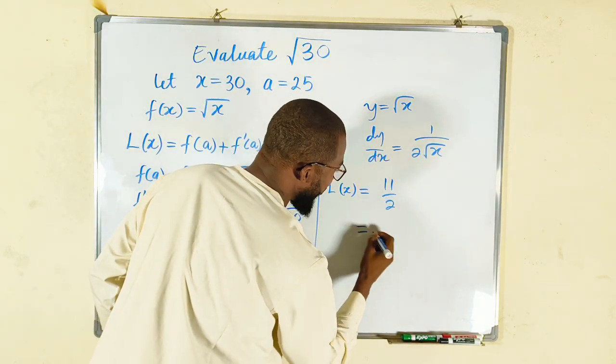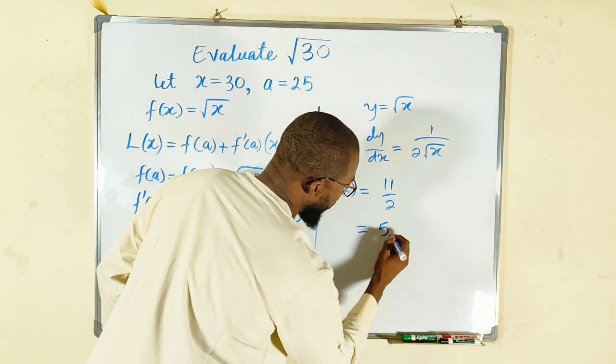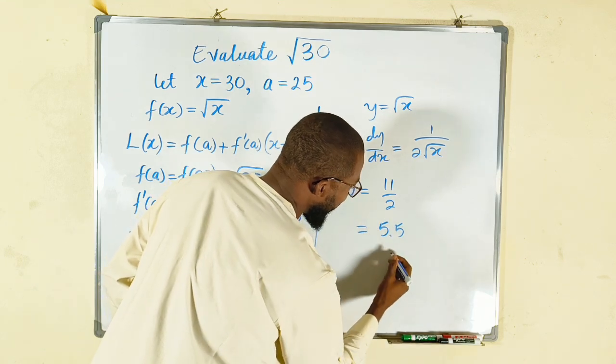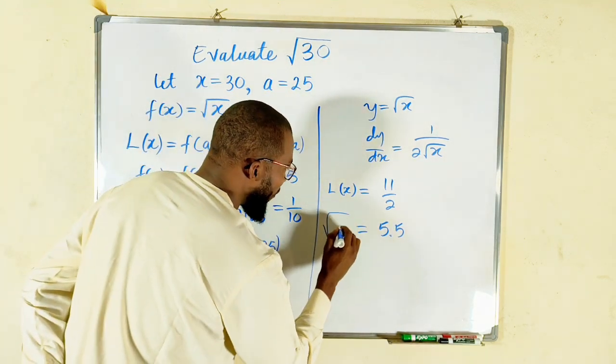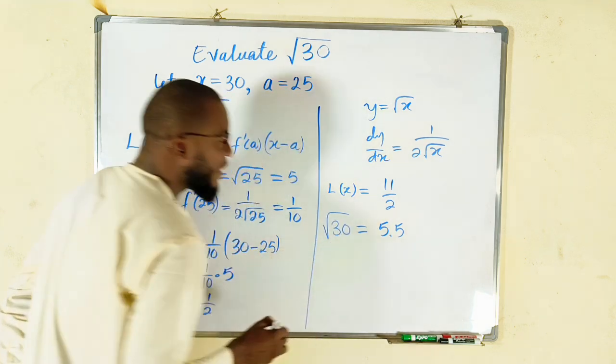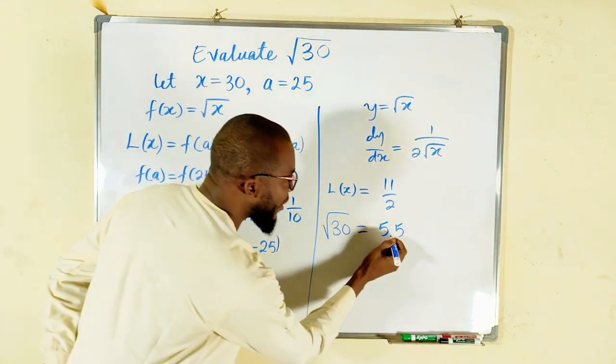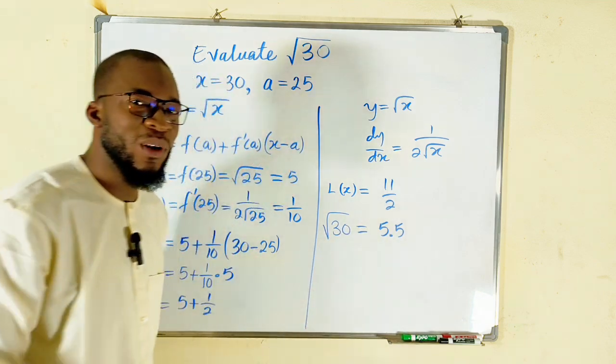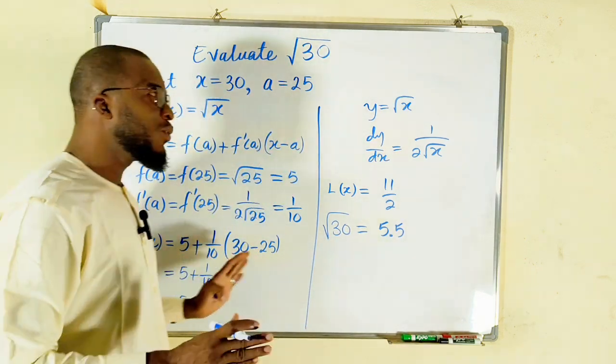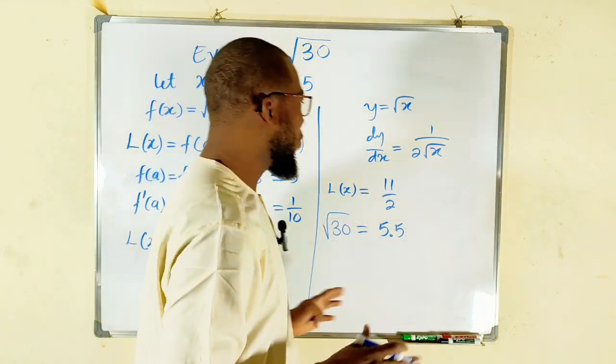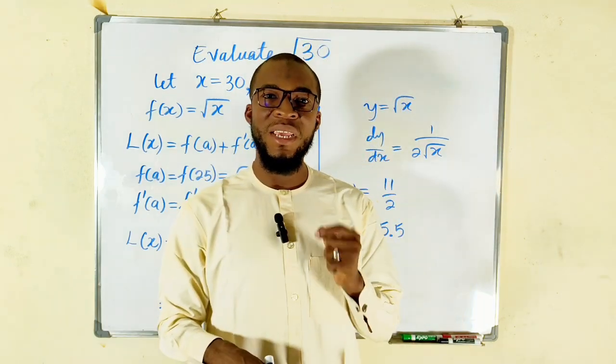And 11 divided by 2 is 5.5. So it means that the square root of 30 is 5.5. You can use a calculator to confirm that in one decimal place. So this is exactly how to find the square root of non-perfect square numbers applying the idea of linearization.